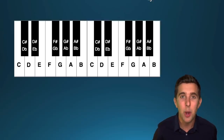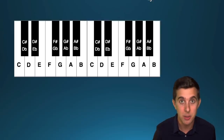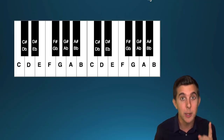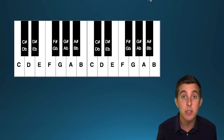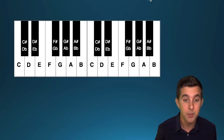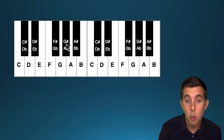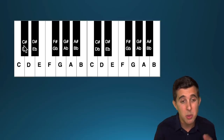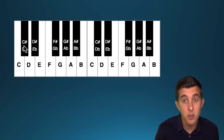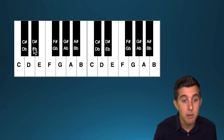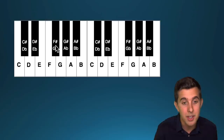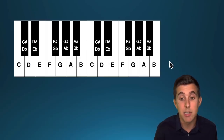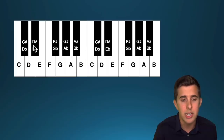Now we're going to have a look at working out a major scale. This is really simple once you know this one pattern that will allow you to work out any major scale in any key. We have 12 different keys, one for every single note. Going up: C, C sharp / D flat, D, D sharp / E flat, E, F, F sharp / G flat — that hashtag symbol is a sharp, the little B is a flat — G, G sharp / A flat, A, A sharp / B flat, B, and then back to C. Then the keys repeat.